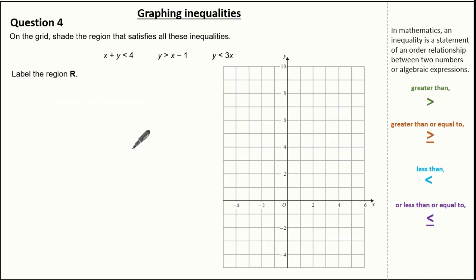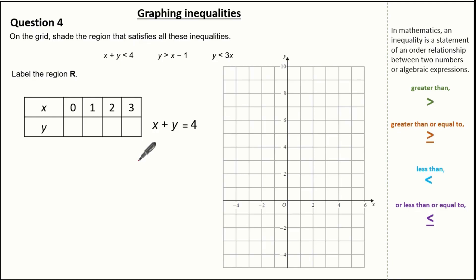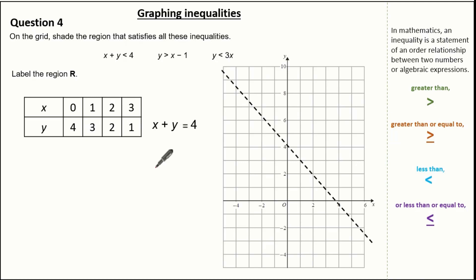Starting with x plus y is less than 4: I'll look at the equation x plus y equals 4. When x is 0, y is 4; when x is 1, y is 3; when x is 2, y is 2; when x is 3, y is 1. Plotting this on our graph I'm using a dotted line because the inequality states it's less than. Because I want x plus y less than 4, I only want the region below the line.